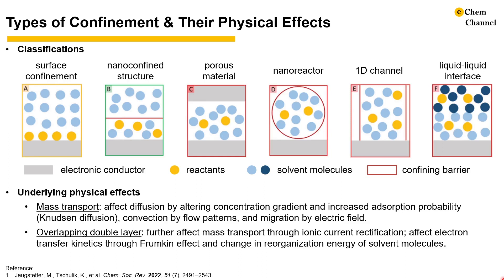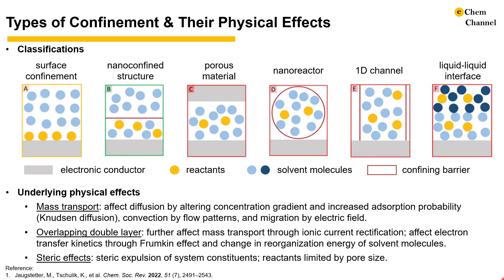This also changes the reorganization energy of solvent molecules and the ion distribution in the outer Helmholtz plane, and specific adsorption, which leads to changes in electron transfer kinetics, also known as the Frumkin effect. Lastly, the confined space can expel some constituents of the system due to the steric effect and can limit the access of reactants if the pore size is smaller than the size of the reactant.